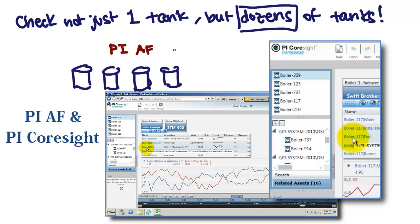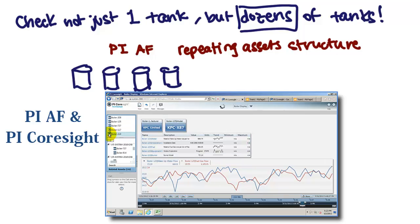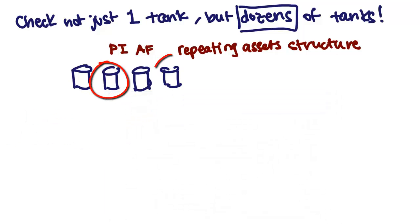With the repeating asset structure in Pi AF, I can see them all side by side and all using just one display. I see which ones are going to be causing me trouble in the next few weeks, allowing me to put it on my schedule so I'm one step ahead of these breakdowns.